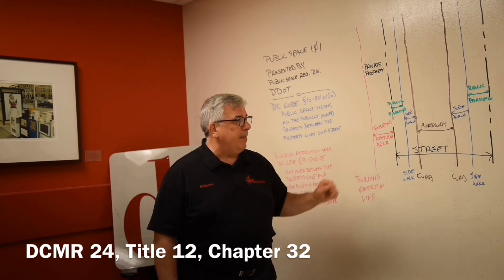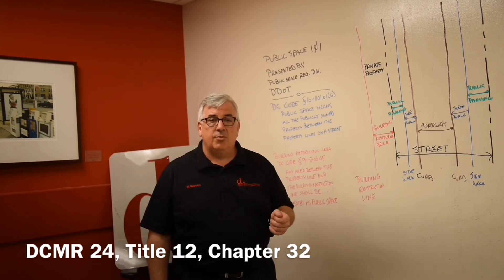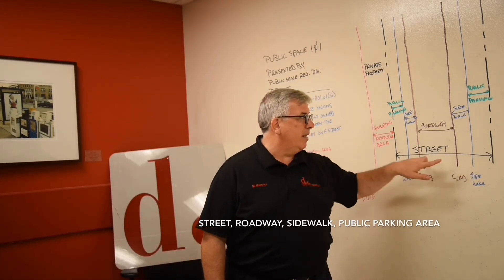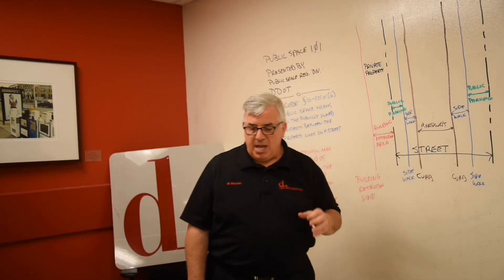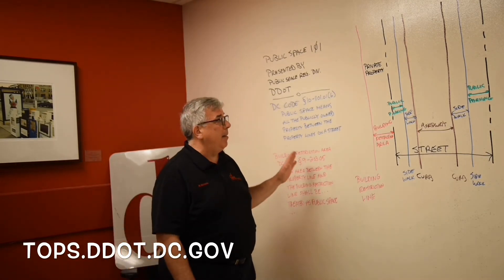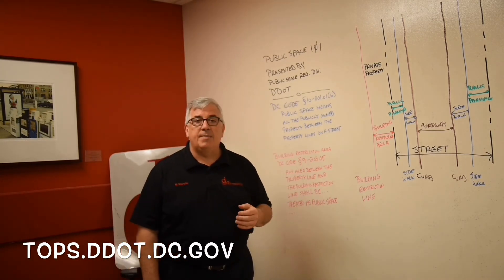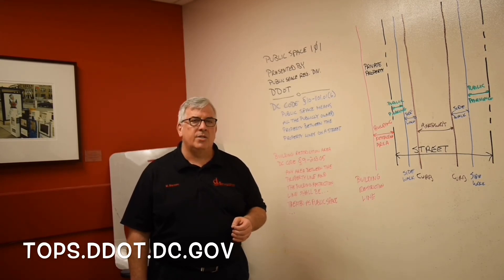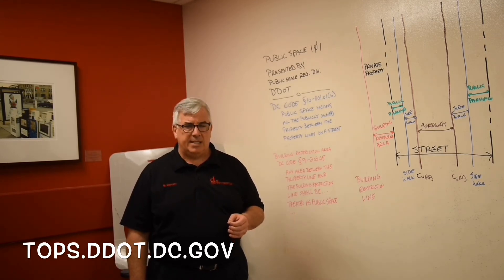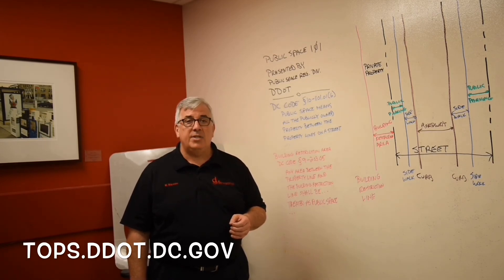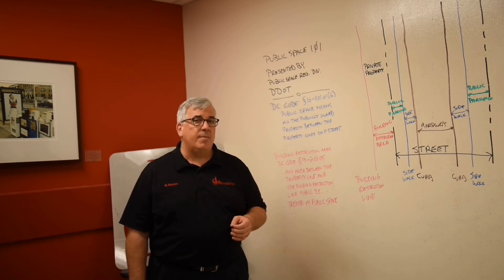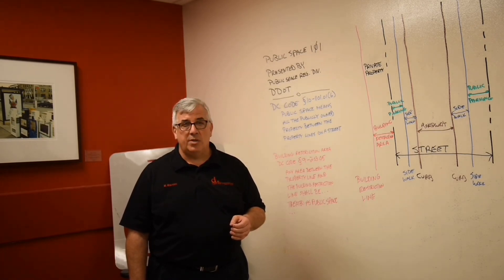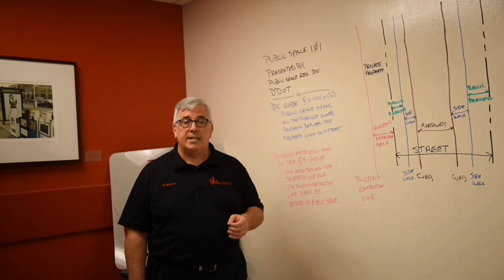So that's what public space is and the different types of distributions that it has: the street, the roadway, the sidewalk, and the public parking area. If you'd like more information about public space and what public space is distributed at a particular location, you can always go online to TOPS, which is our online permitting system, at tops.ddot.dc.gov and click on the Map Tool. For more information about how to use our Map Tool, please see our short and sweet video on the Map Tool in TOPS.